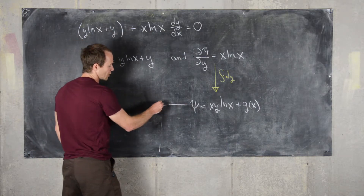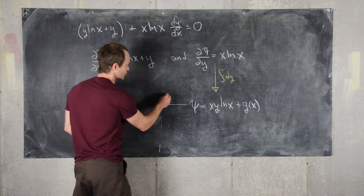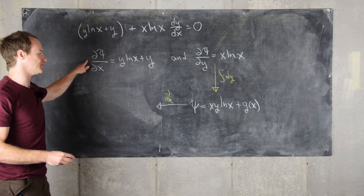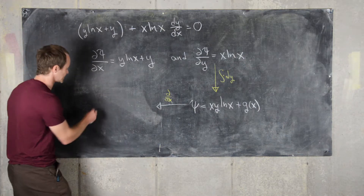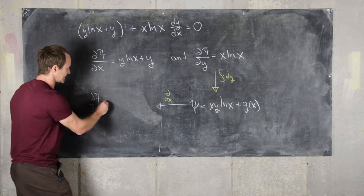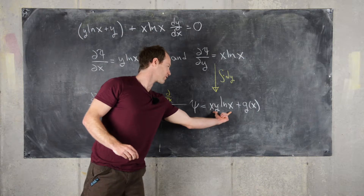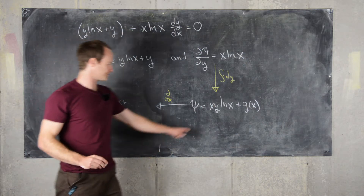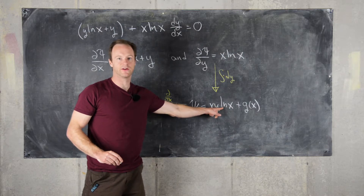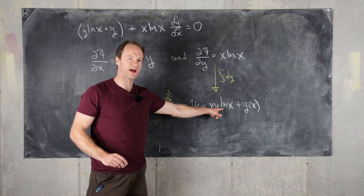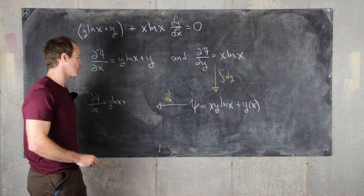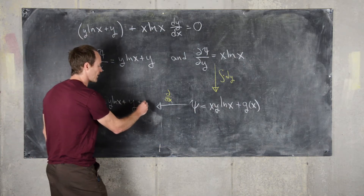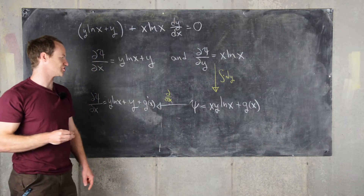Next, we take the partial of Psi with respect to X and compare it with what we know it should be. Using the product rule, we get d Psi/dX equals Y times the natural log of X plus Y times X times the derivative of natural log of X. Since the derivative of natural log of X is 1 over X, X over X equals 1, so this becomes plus Y. Finally, we add the derivative of G with respect to X, which is G prime of X.